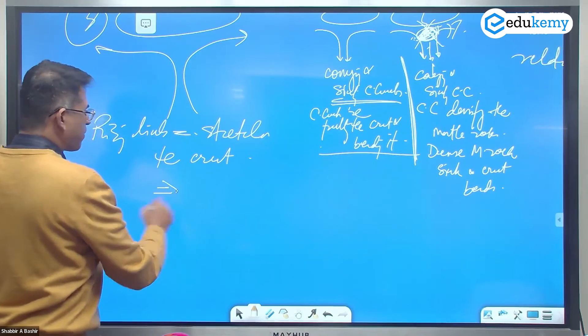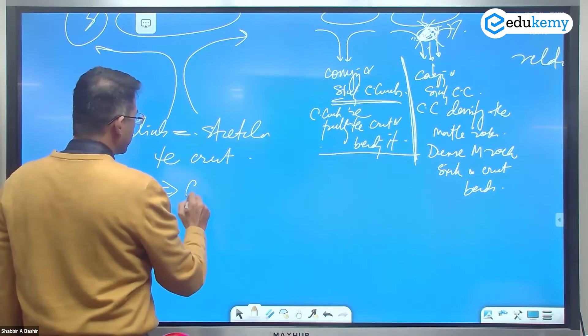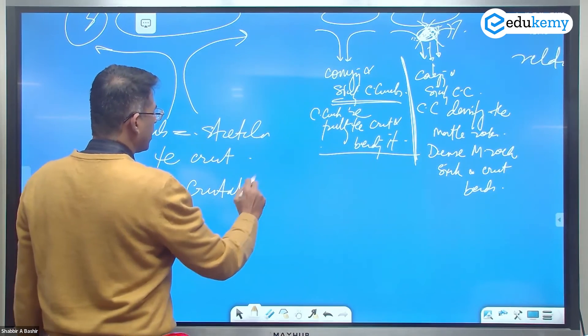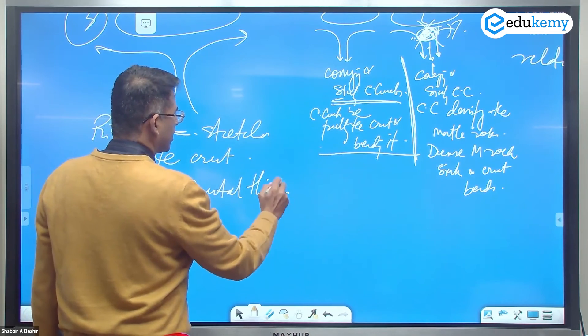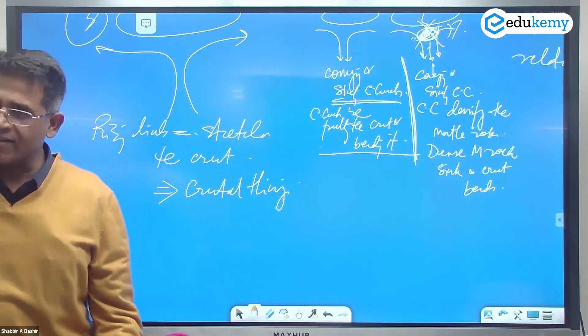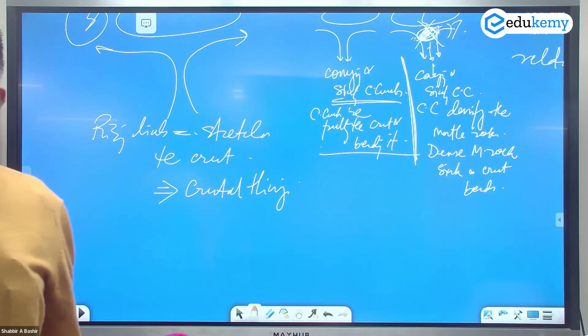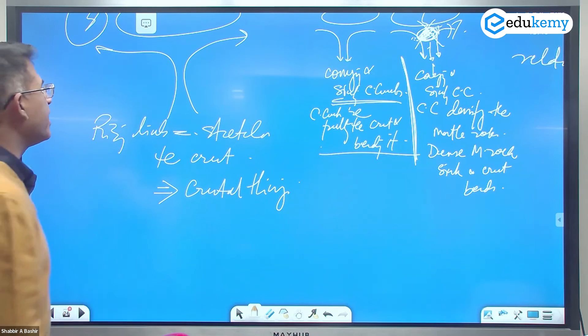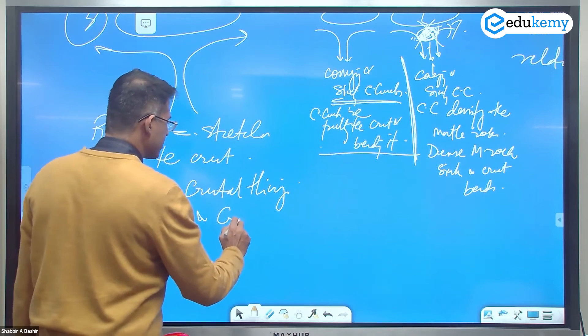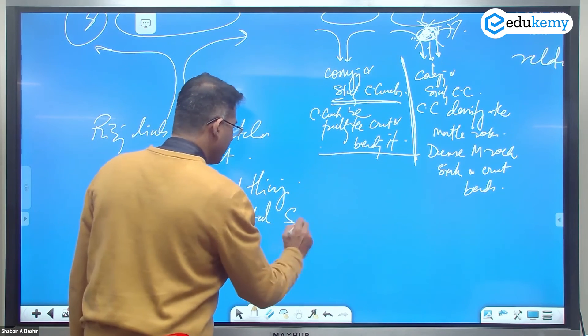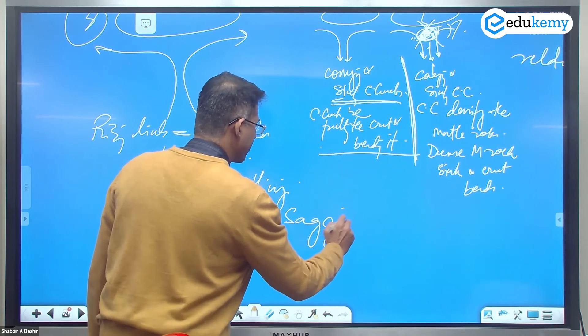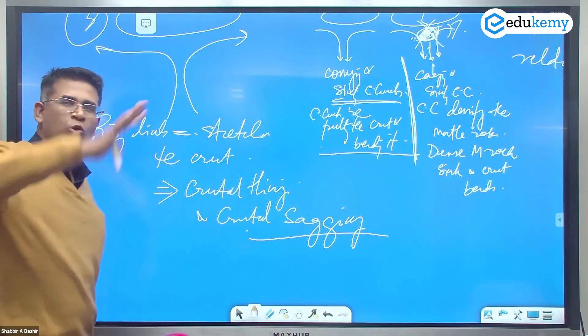Because of this what happens? There is crustal thinning. There is crustal thinning and there is crustal sagging. Crust hangs down below.